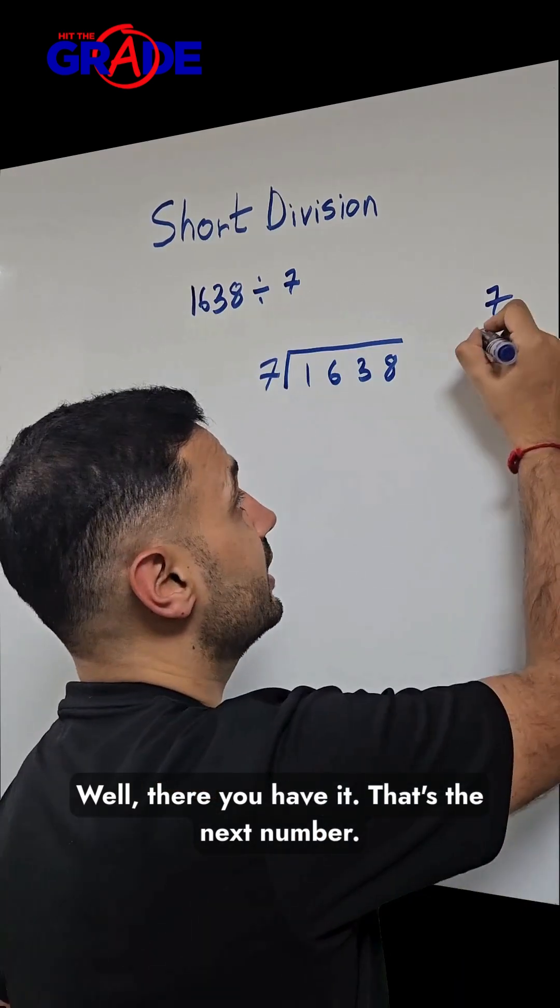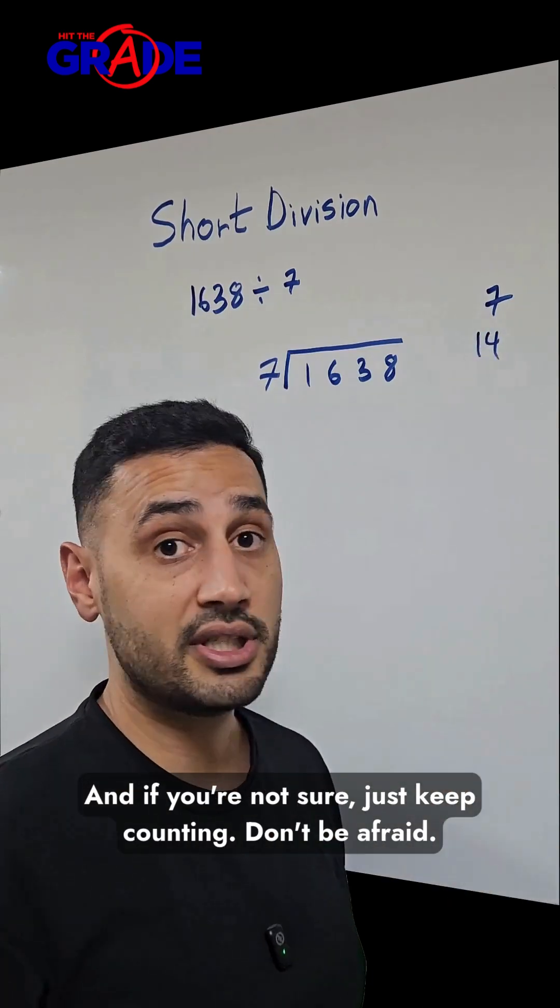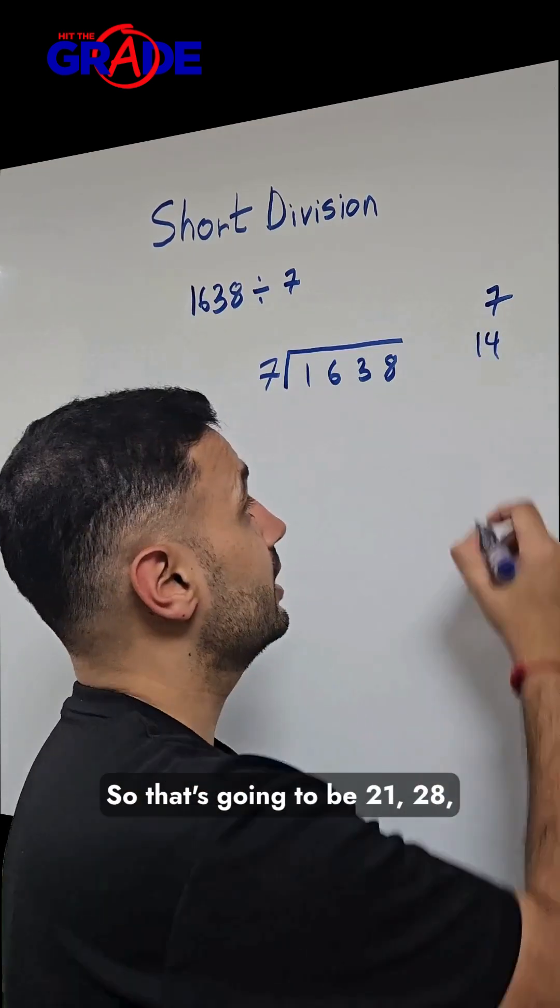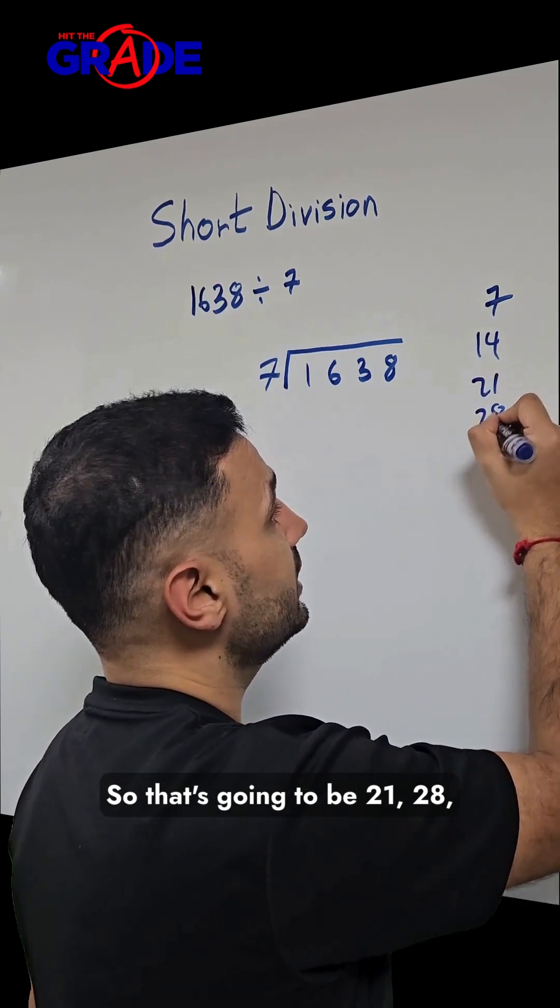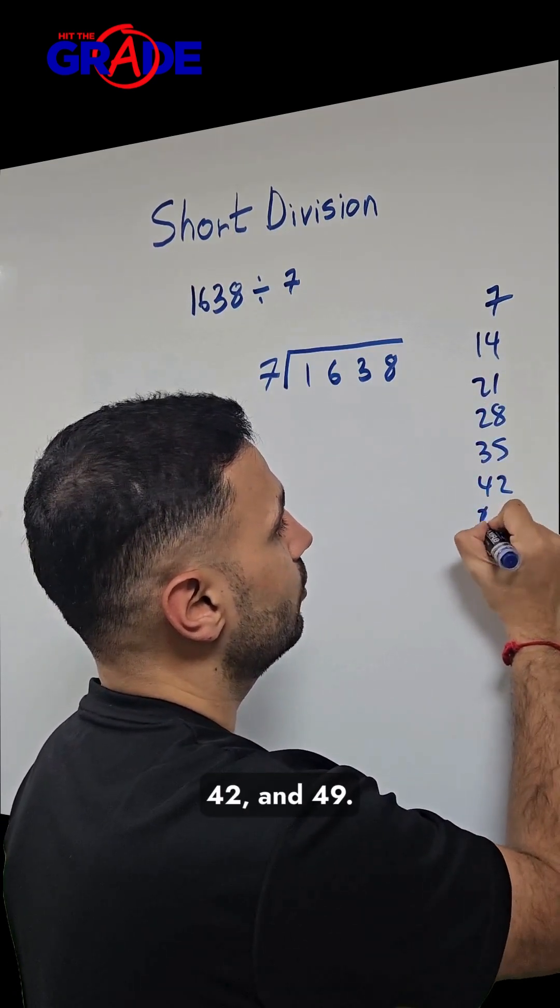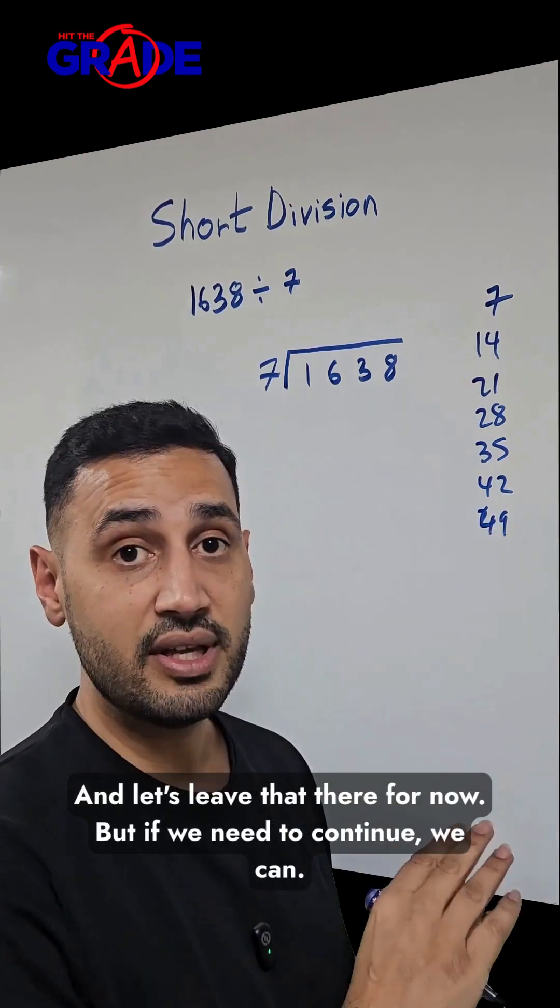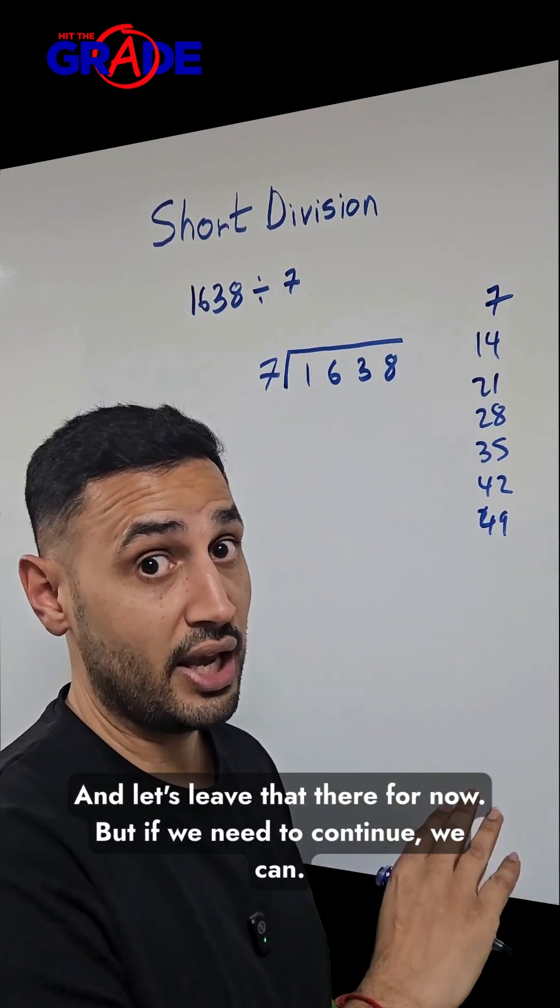Well, there you have it. That's the next number. And if you're not sure, just keep counting. Don't be afraid. So that's going to be 21, 28, 35, 42, and 49. And let's leave that there for now. But if we need to continue, we can.